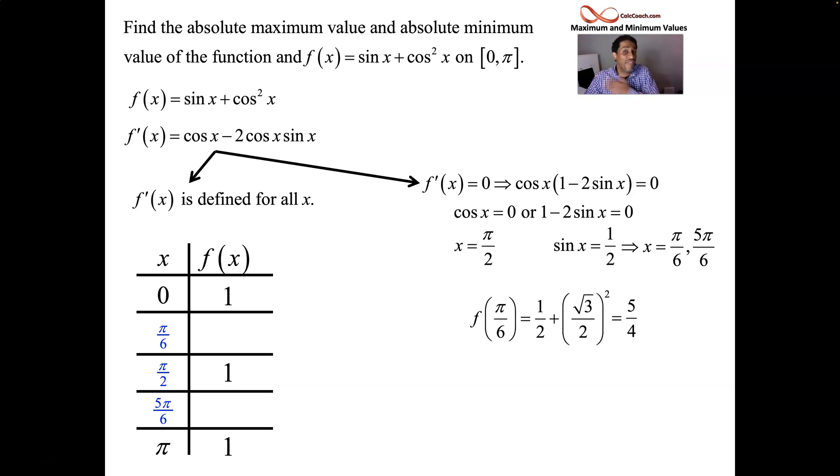Look down that list of y values. The smallest is 1. It occurs three times. The biggest is 5/4. It occurs twice. It's all good. Your absolute minimum value is 1. Your absolute maximum value is 5/4.